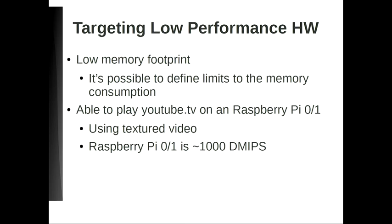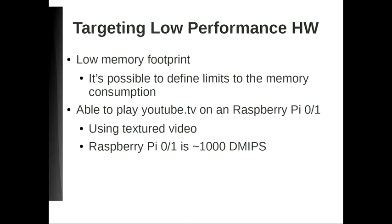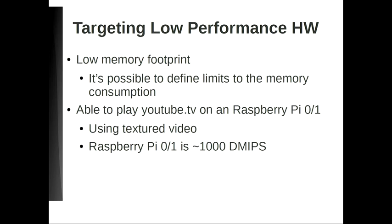We are targeting low-end devices because we know that set-top boxes especially have quite slow hardware. We address this on two fronts: we want to use the smallest amount of memory possible, and we have a system to define memory limits within a reasonable range so we can tweak the memory usage depending on the platform. It's pretty lightweight — we are able to play YouTube TV with MSE on a Raspberry Pi 0 or Raspberry Pi 1, which is single-core ARMv6, using the GPU to display the video. Keep in mind the Raspberry Pi 0 or 1 has a capability of around 1,000 DMIPS, which is pretty low. We usually work on the Raspberry Pi 2, which is around 8,000 DMIPS.